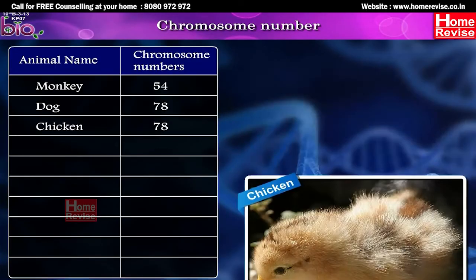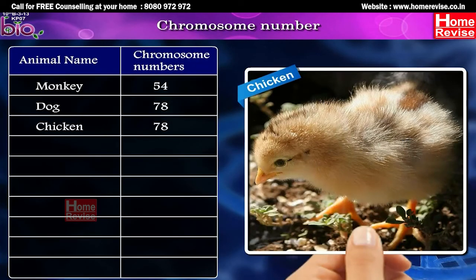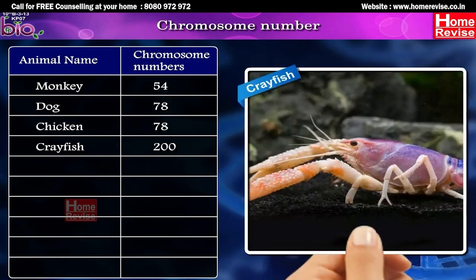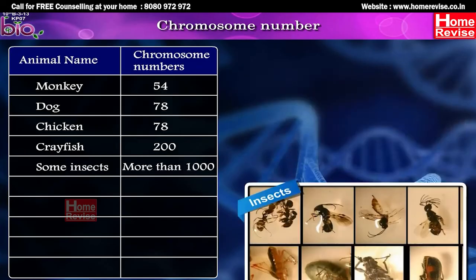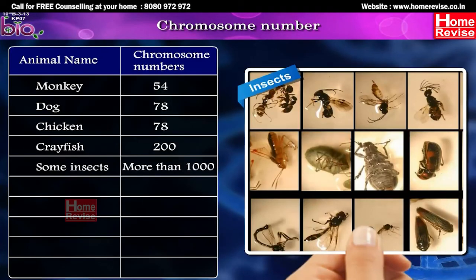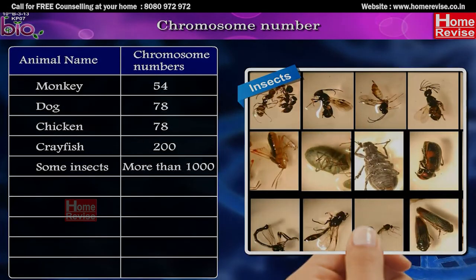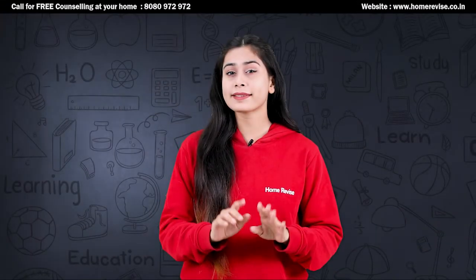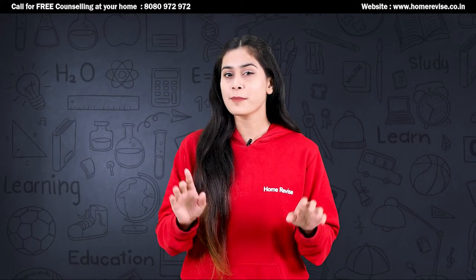Chromosome numbers of some common animals and plants: Ascaris — 2; onion — 16; maize — 20; lion — 38; tiger — 38; domestic cat — 38; mouse — 40; humans — 46; gorilla — 48; potato — 48; monkey — 54; dog — 78; chicken — 78; crayfish — 200; some insects — more than 1,000.